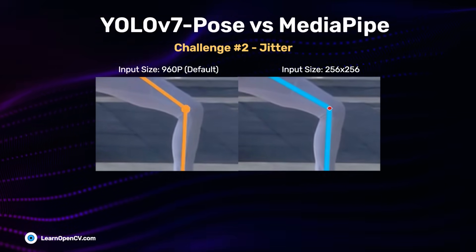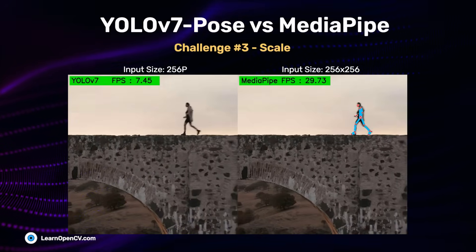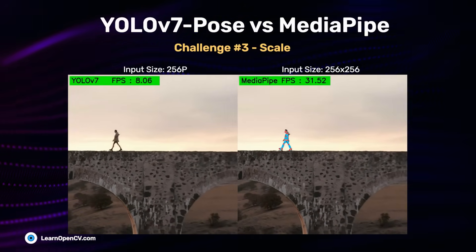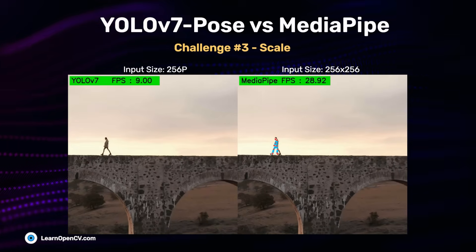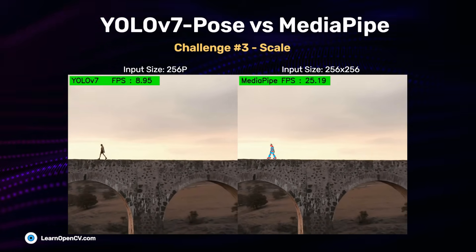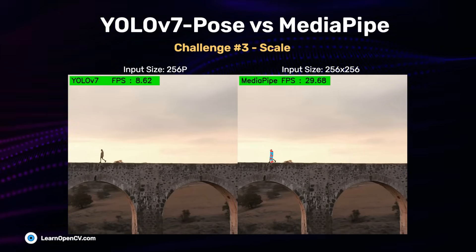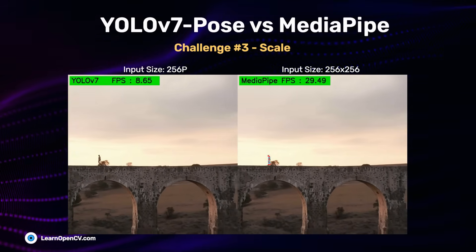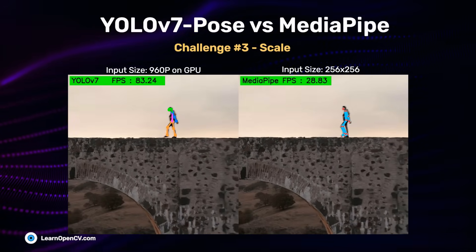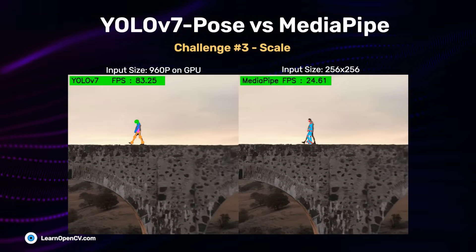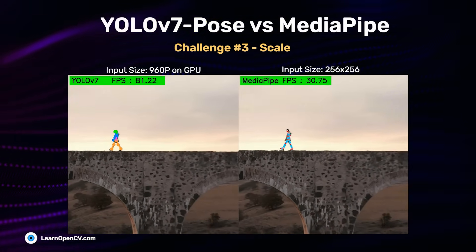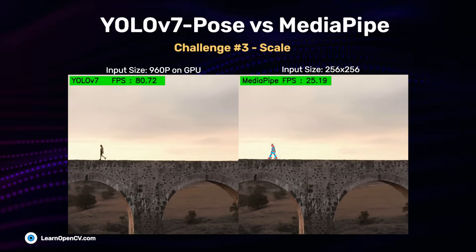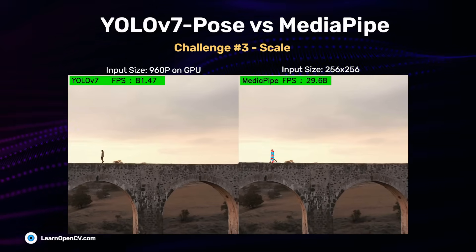The next comparison checks scale variations — what happens when the person size varies. The YOLO model with a small input size of 256 fails to detect the person, but MediaPipe detects the keypoints. YOLO V7 at 960p detects for some frames but then fails, while MediaPipe continues to detect because once it has tracked the person it maintains keypoints across frames.